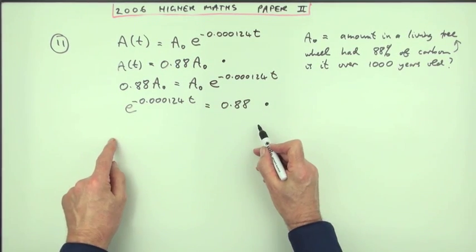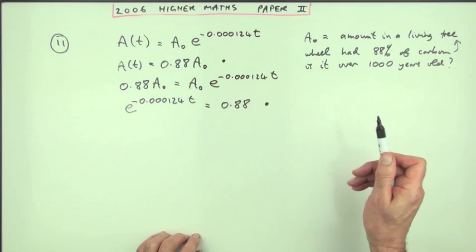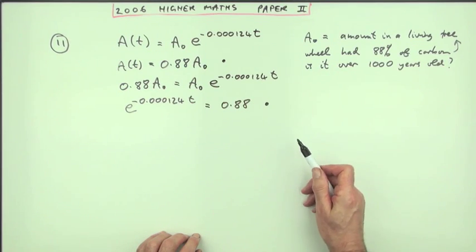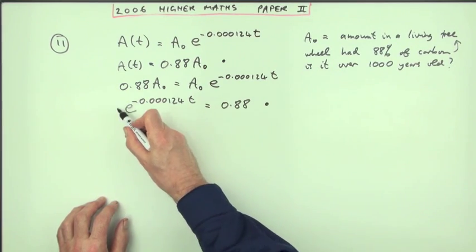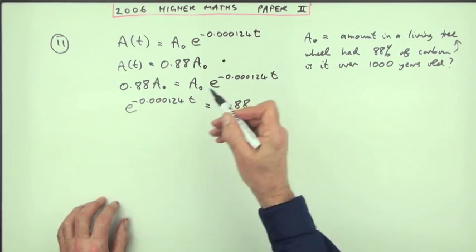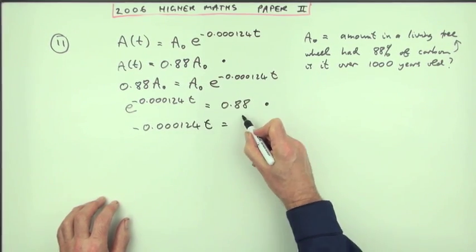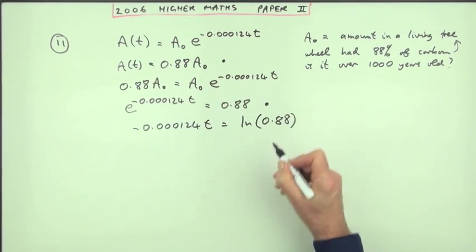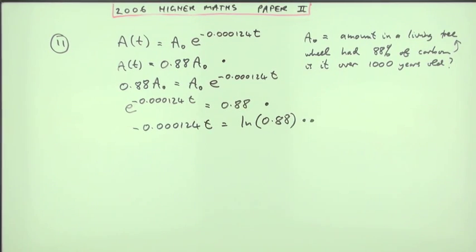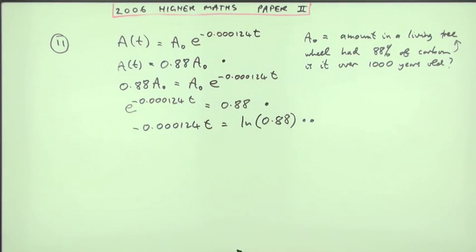Now there's two marks for this next line. You don't really need to take logs of both sides when you've got natural logarithms on your calculator. You could just use the inverse and say what's the inverse of exponential? It's log of that base. So negative 0.000124t equals natural log of 0.88, which gets two marks just by using the inverse function. Get rid of exponential so on the other side you've got log. And you would get marks three and four for going from there straight to there.